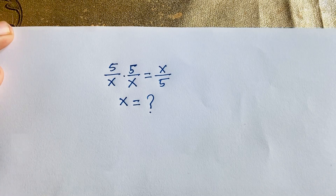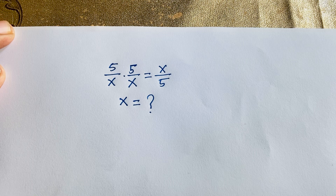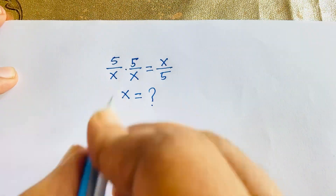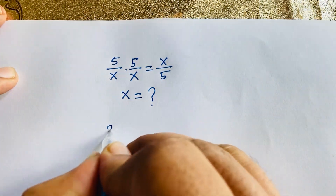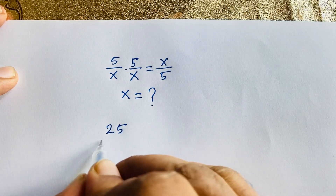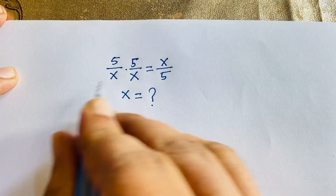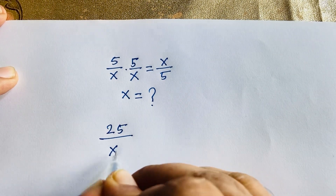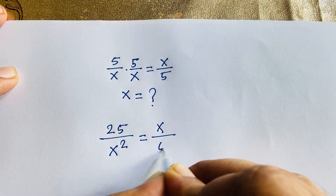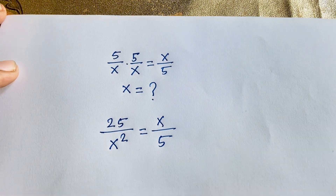How to solve this interesting math question: 5 over x times 5 over x is equal to x over 5. What is x? So in this case, the left side becomes 25 over x squared, because 5 times 5 is 25 and x times x is x squared, and that equals x over 5.